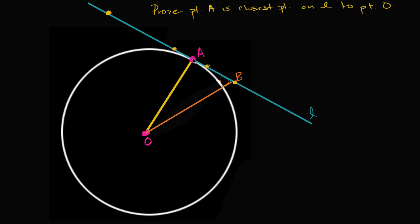Point A is the only point on line L that sits on the circle, by definition — this is a tangent line. Every other point on line L sits outside of the circle, so you have to go the radius length and then some. This means point A is the closest point on L to the center of the circle.